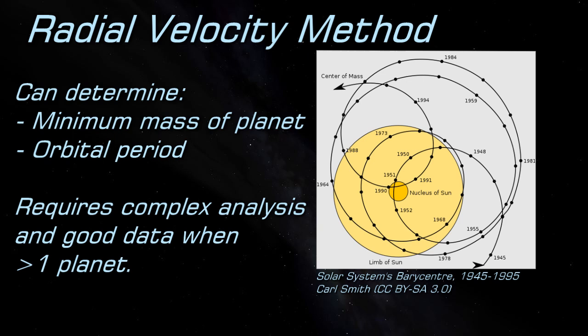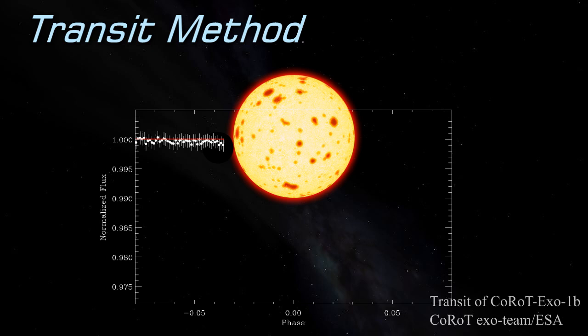The transit method measures the brightness of a star and looks for dips in its brightness as the planet transits in front of it, blocking some of its light. Clearly this method can only be used when the orbital plane is aligned with our line of sight to a star. The proportion of stars where this is the case is small, so you can't use this method on them all.